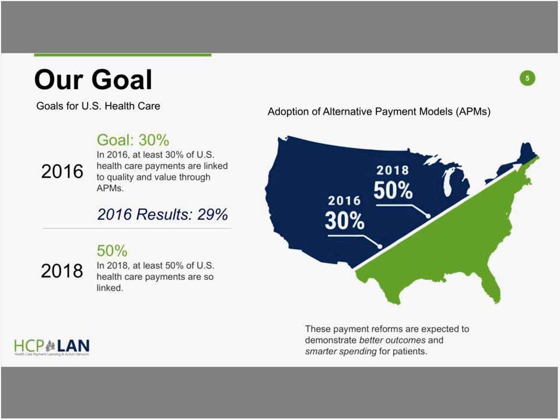The LAN is a public-private partnership overseen by a multi-stakeholder guiding committee. In 2015, HHS launched the LAN to help develop work being done across sectors to increase the adoption of alternative payment models. It is the third year that the LAN conducts the measurement effort, which is an important component of the LAN's total portfolio of work. The LAN measurement effort represents the most comprehensive coordinated effort to track the adoption of APMs and to measure progress towards national goals for payment reform.